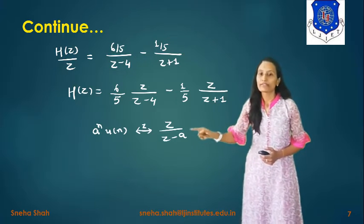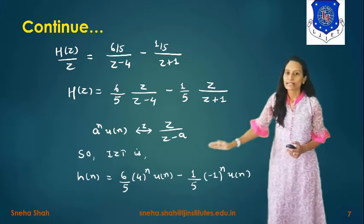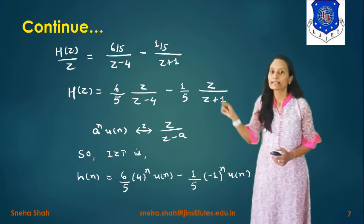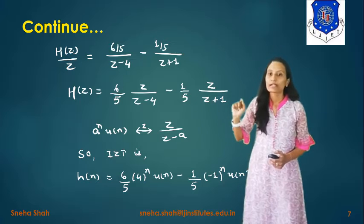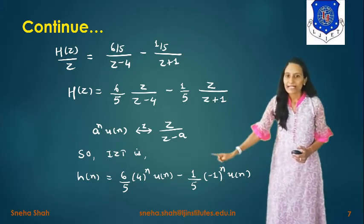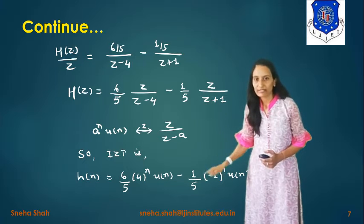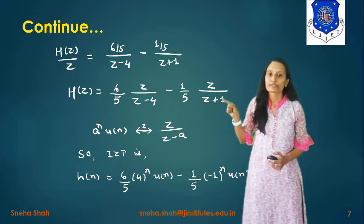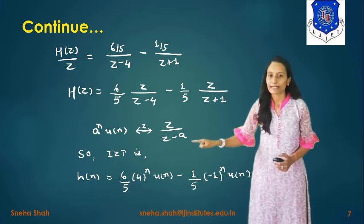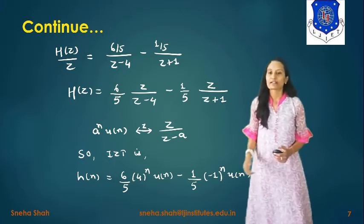Applying the inverse Z-transform using z/(z - a) ↔ aⁿu(n): for the term z/(z - 4), comparing with z/(z - a), the value of a = 4. For the term z/(z + 1), rewriting as z/(z - (-1)), the value of a = -1. Therefore, h(n) = (6/5)(4)ⁿu(n) - (1/5)(-1)ⁿu(n). This is the final answer for h(n).